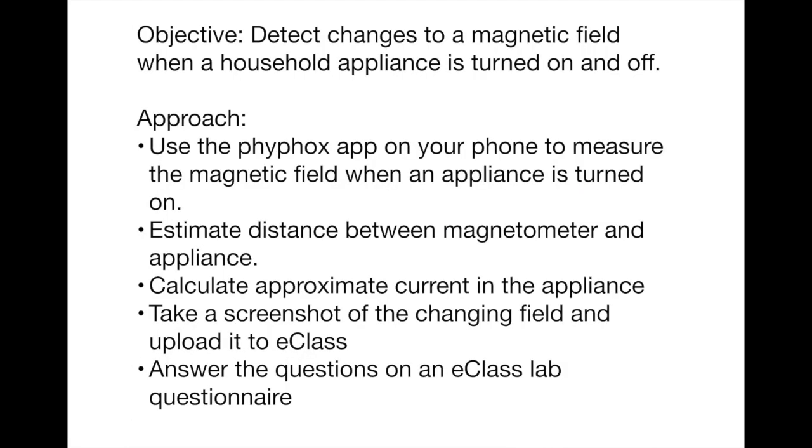The objective of this lab is to detect the changes in a magnetic field when a household appliance is turned both on and off. We'll take the basic approach that we'll use the Phyphox app on the phone to measure the magnetic field when the appliance is turned on. We'll estimate the distance between the magnetometer of the phone and the appliance, and we'll use that to calculate the approximate current in the appliance using the Biot-Savart law.